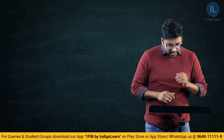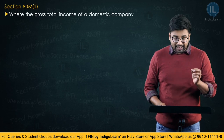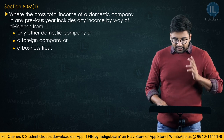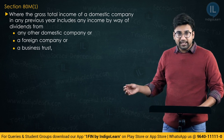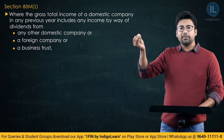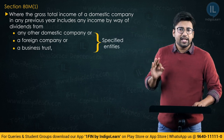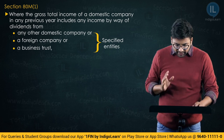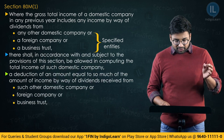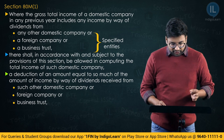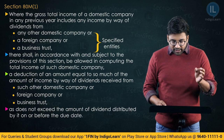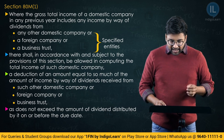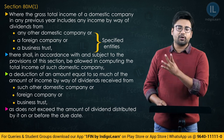Let me read section ATM — this section is sure shot going to be tested in your exams. ATM subsection 1: where the gross total income of a domestic company in any previous year includes any income by way of dividends from any other domestic company or a foreign company or a business trust. If it receives from any other entity, this section is not applicable — for example, from a cooperative society. There shall be allowed in computing the total income of such domestic company a deduction of an amount equal to so much of the amount of income by way of dividends received from a domestic company, foreign company, or business trust, as does not exceed the amount of dividend distributed by it on or before the due date.